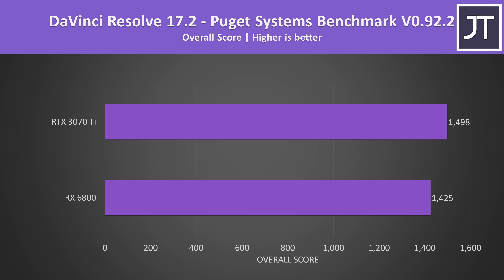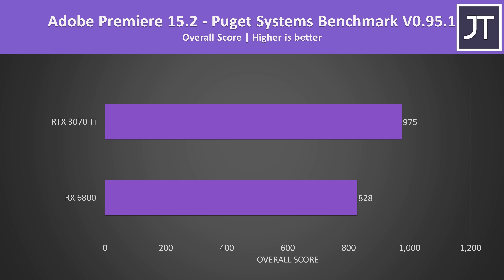Now let's check out the differences in content creator workloads — it's not all just about gaming. I've tested DaVinci Resolve with the Puget Systems benchmark, and the 3070 Ti is scoring 5% above the 6800. The gap was much bigger in Adobe Premiere, where the 3070 Ti was ahead by almost 18%. Generally Nvidia is ahead for content creation, likely because many of these software suites have been better optimized for Nvidia over time.